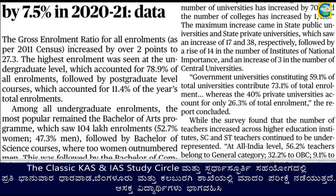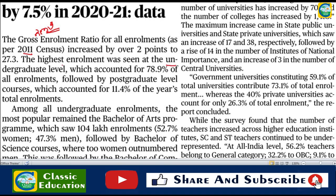Gross Enrollment Ratio - GER is a key metric. Comparing enrollment at the national level, the highest enrollment is at the undergraduate level. Undergraduates represent the largest category in the curriculum. For PUC level, the degree of enrollment is 80.9 percent. For the degree level, it is 90.4 percent.